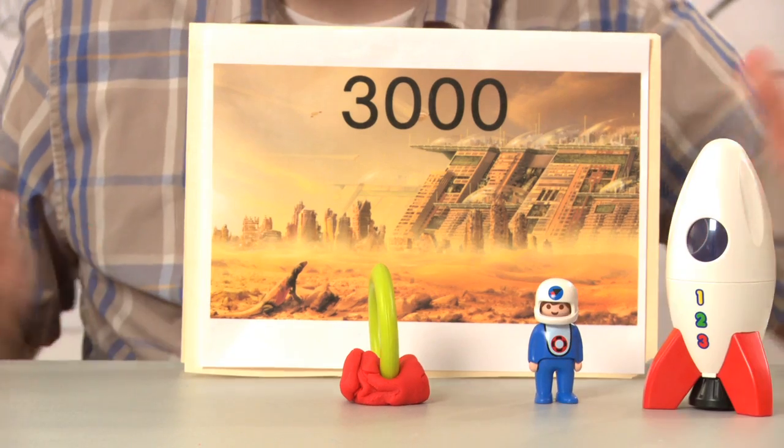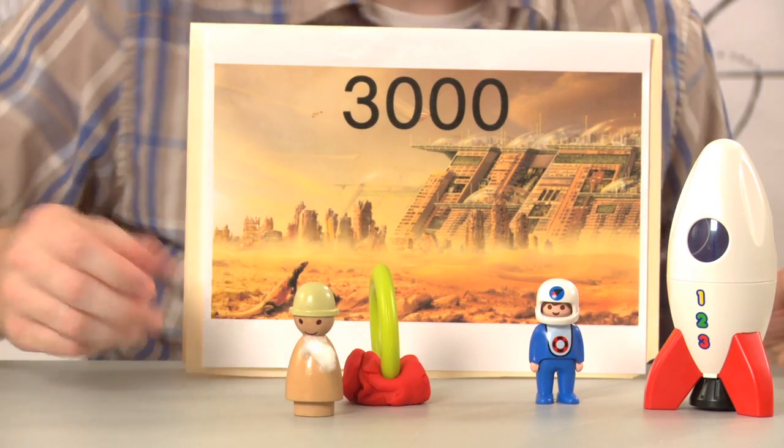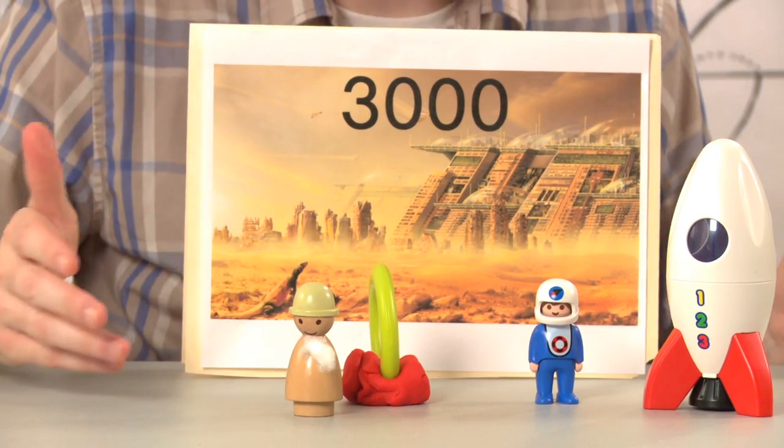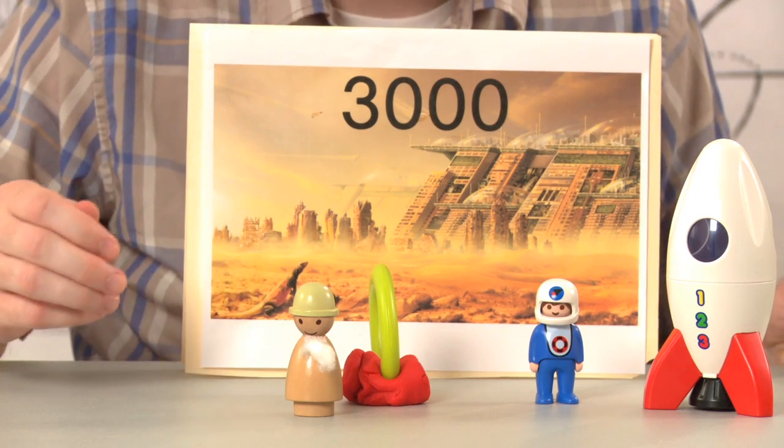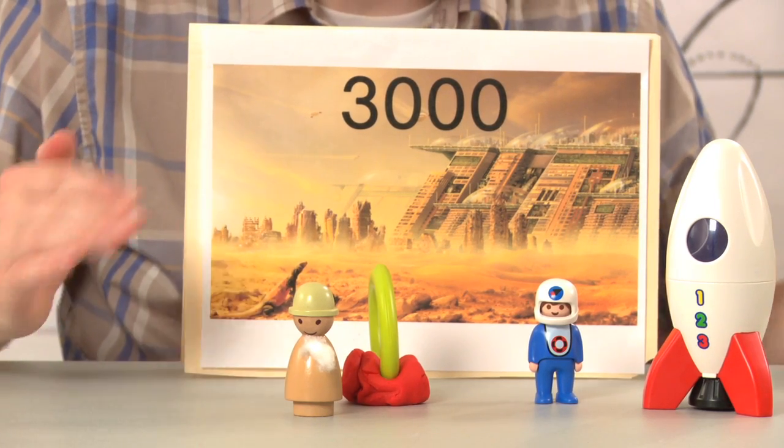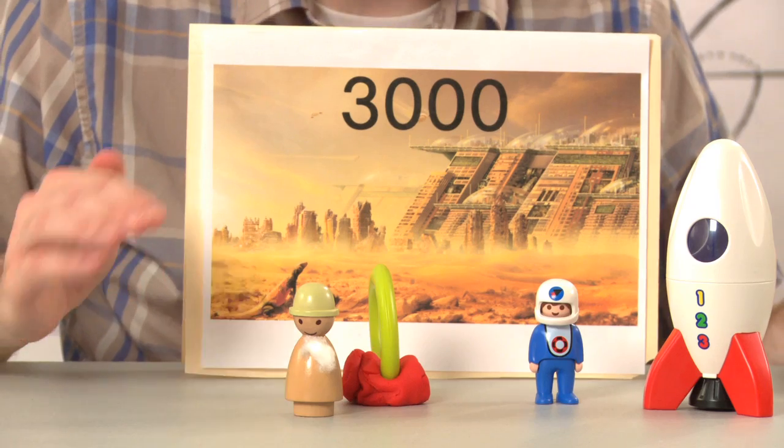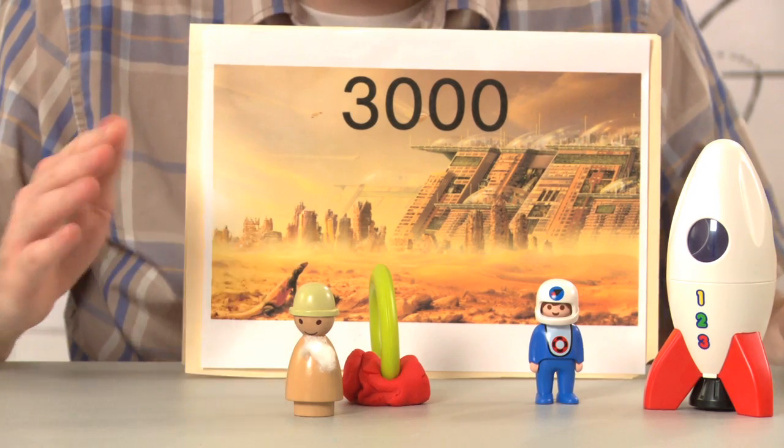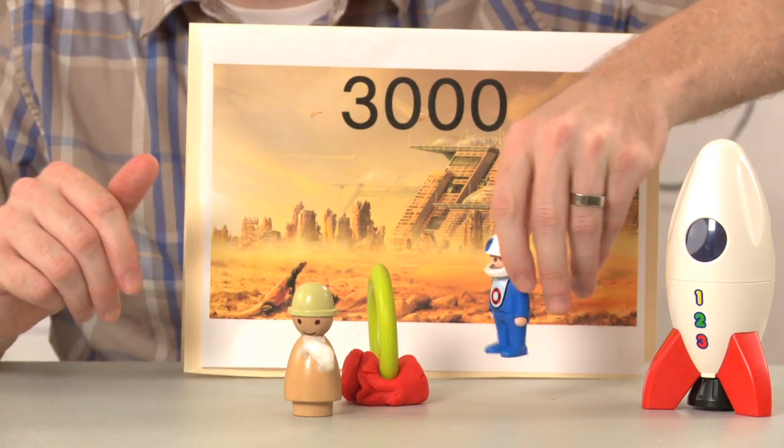Bill lands on Earth. Runs into Bob, who now has a long white beard and is having trouble getting around. Bob tells Bill, it's the year 3000. 950 years has passed on Earth while you experienced three months. Bill says, yeah, yeah, that's great. You got my money?